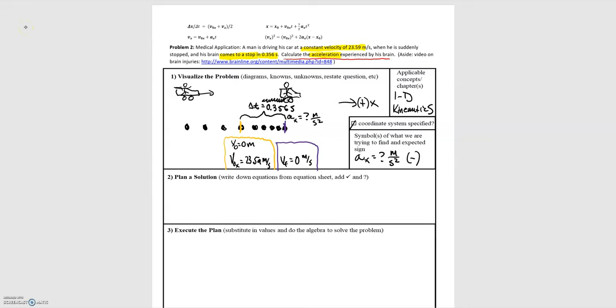So now that we've drawn a diagram and we've identified our knowns and unknowns, we can plan our solution. So we know our initial and final velocity, and we know the time interval that all that happens at. And we're looking for an acceleration.